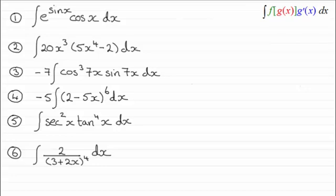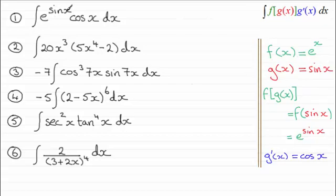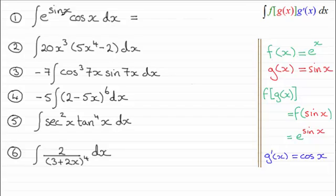Welcome back. For this first one, it's based around f(x) being e to the power x and g(x) being sin x, where g'(x), the differential of sin x, is cos x. As I explained in the earlier tutorial, you integrate f(x), which is e^x — integrating that gives e^x. You then replace x with what you nominated g(x) to be, which was sin x. So the answer is e to the power sin x, plus your constant of integration.